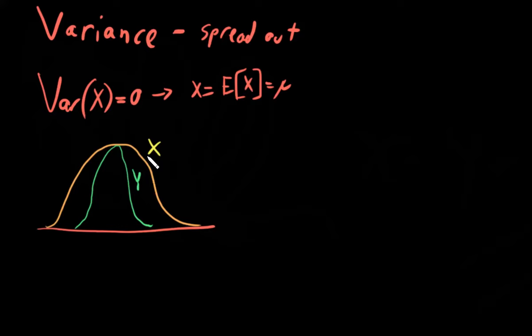If X is the random variable that describes the distribution, and Y is the random variable that describes this distribution, what can we conclude? We can conclude the variance of X is greater than the variance of Y.